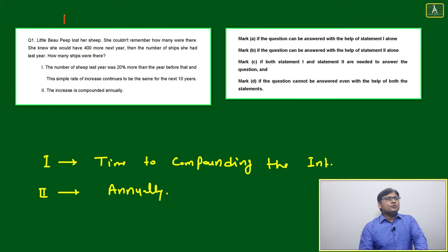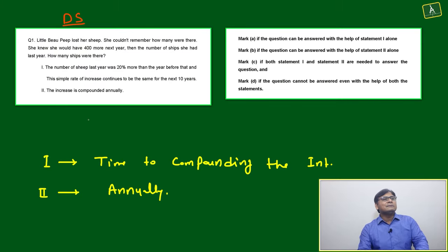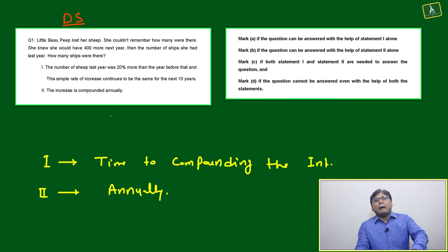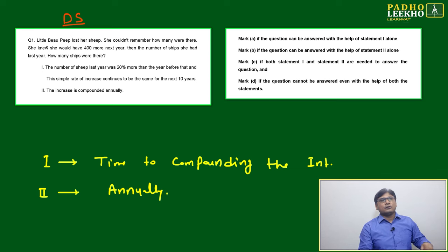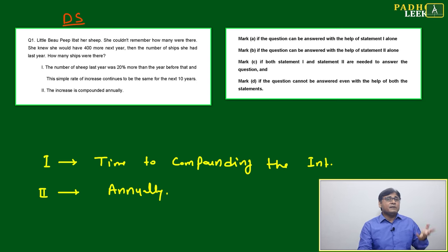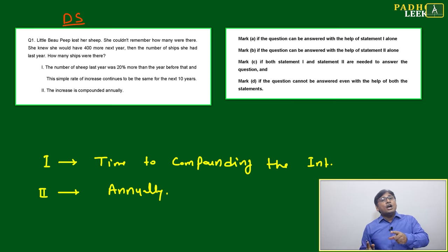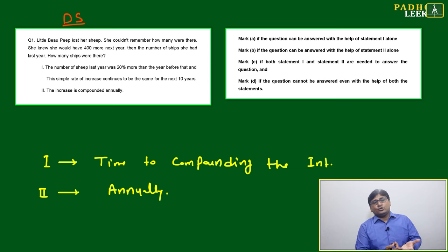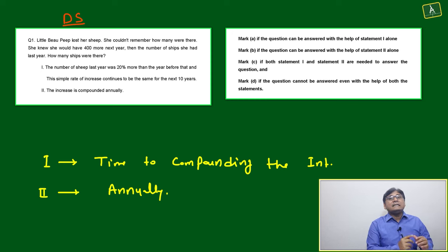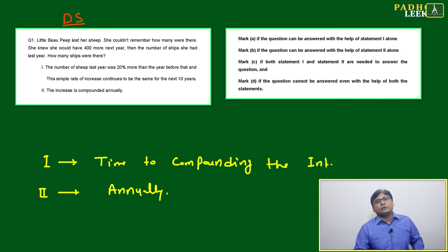Welcome to this Data Sufficiency (DS) question. In DS, two statements are given and we have to verify whether these statements, either individually or combined, are sufficient to answer the question. We should always be careful about what information is given and what information is needed to solve the question — we only check the solvability, not solve it exactly.